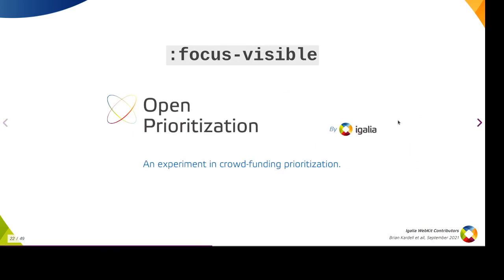Focus Visible is another thing I'd like to highlight. This is part of our open prioritization experiment, where we began the conversation about how it is very difficult to prioritize and how diversifying investment in the platform is really good. Focus Visible was the project chosen among six other projects in different areas of the platform, asking for different levels of investment. Igalia matched the funds and did that work early this year. It is currently in the codebase, in Technology Preview behind an experimental flag. However, last miles are hard — we have some challenges and disagreements that are taking a while to work out.